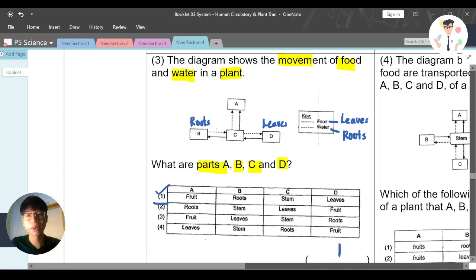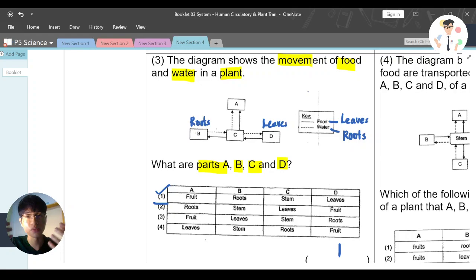So again, you must be clear that leaves is the food provider. Roots is the water provider. So when it comes to the movement of food and water in a plant, this should not be the one that receives water. Roots should not receive water from stem because he is the one supposed to give up the water to other parts of the plant. So the answer is option number one.